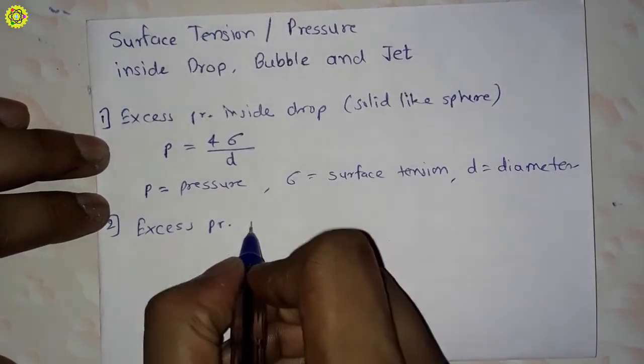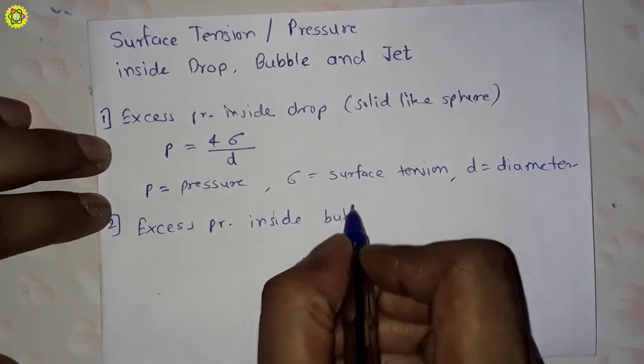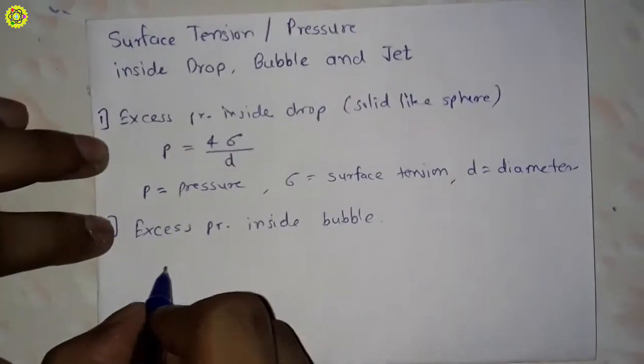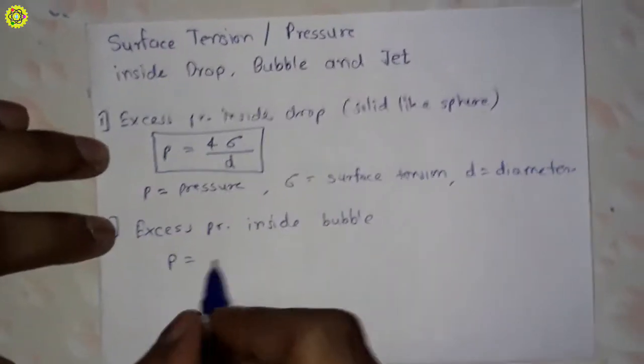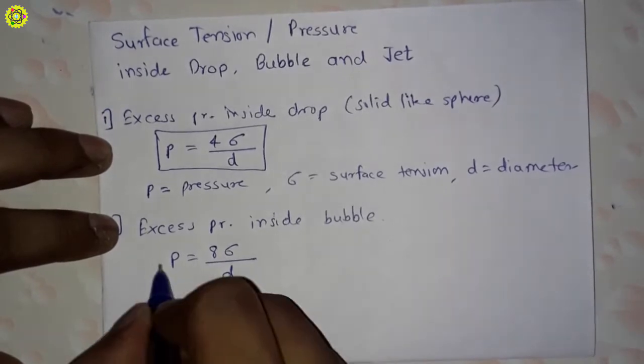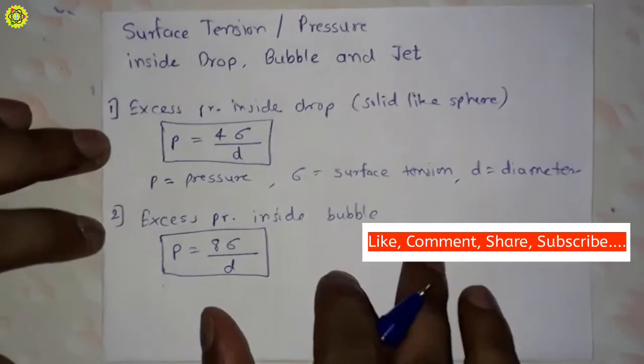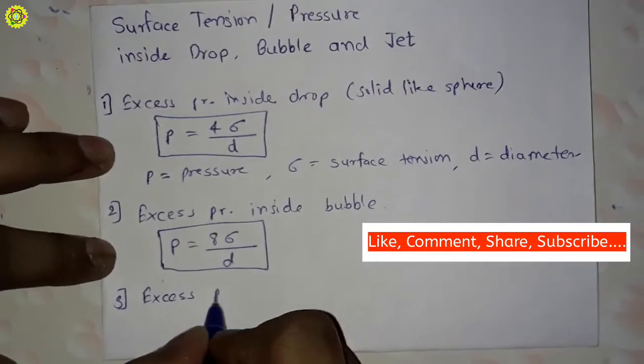...inside bubble, liquid bubble. For this, P = 8σ/d. This is the second formula.